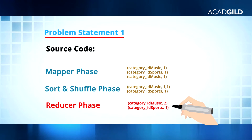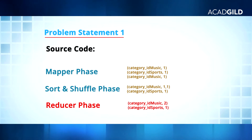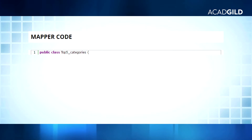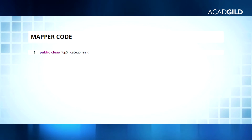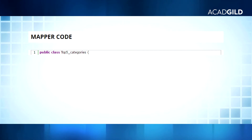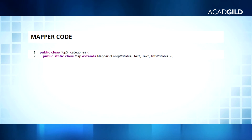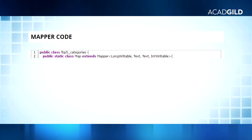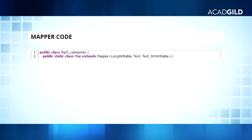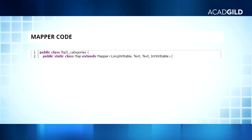In line 1, we are taking a class by the name Top5. In line 2, we are extending the mapper default class that has the arguments key-in as LongWritable, value-in as Text, key-out as Text, and value-out as IntWritable.